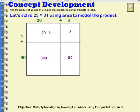Now if I were to add each one of these areas, each one of the inside of my area model, if I were to add each one of these numbers together, I would get 713. So 713 is the product of 23 times 31.